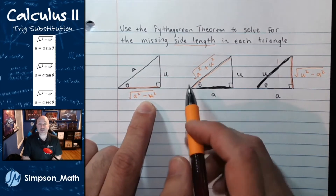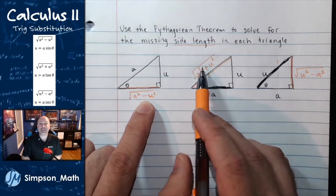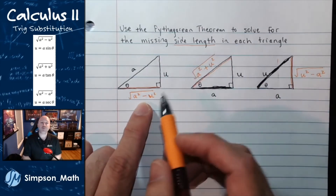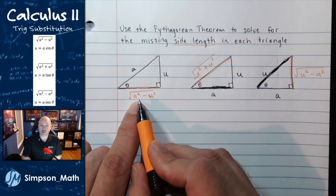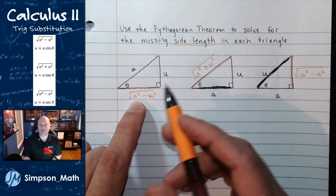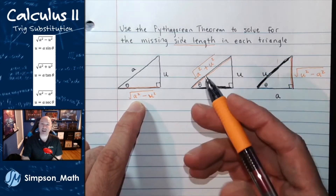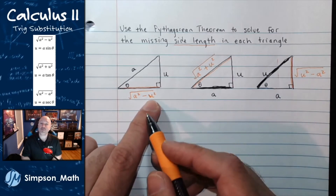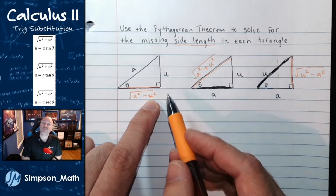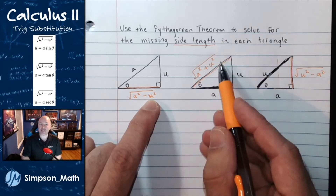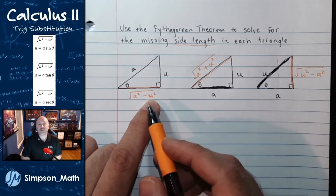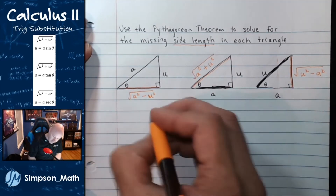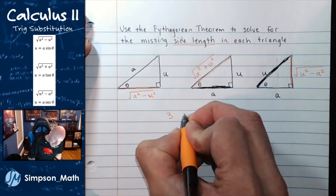For trig substitution, we will come across these three scenarios. We will be looking for the square root symbol, and we will be looking for an a squared, where a represents a number — hopefully nice and pretty, like 9 or 25. And u represents some function being squared. All of these have a u squared, and again we're looking for something pretty — hopefully it's just x, but u is some function.